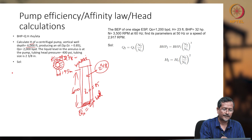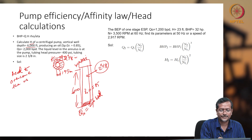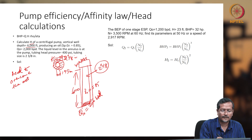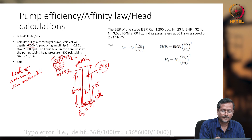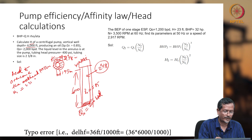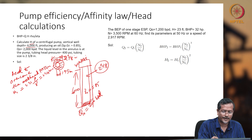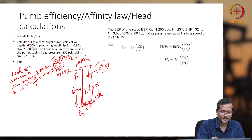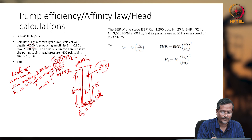Head to overcome the wellhead pressure: H1 equals 2.31 × P / gamma. Using wellhead pressure 400 and specific gravity 0.85, that gives H1 = 2.31 × 400 / 0.85 = 1087 feet.